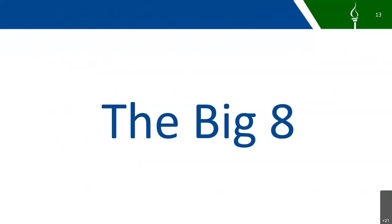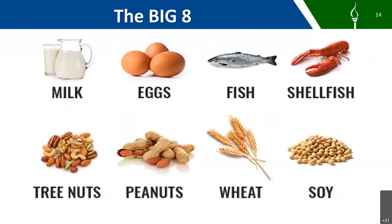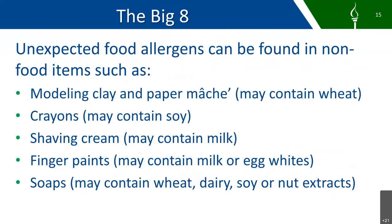Now we're going to talk about the Big Eight. The Big Eight includes milk, eggs, fish, shellfish, tree nuts, peanuts, wheat, and soy. Unexpected food allergens can be found in non-food items as well as food items. Some of the non-food items include modeling clay and paper mache, crayons, shaving cream, finger paints, soaps, and cosmetics — just a wide variety of things that food allergens can be found in.